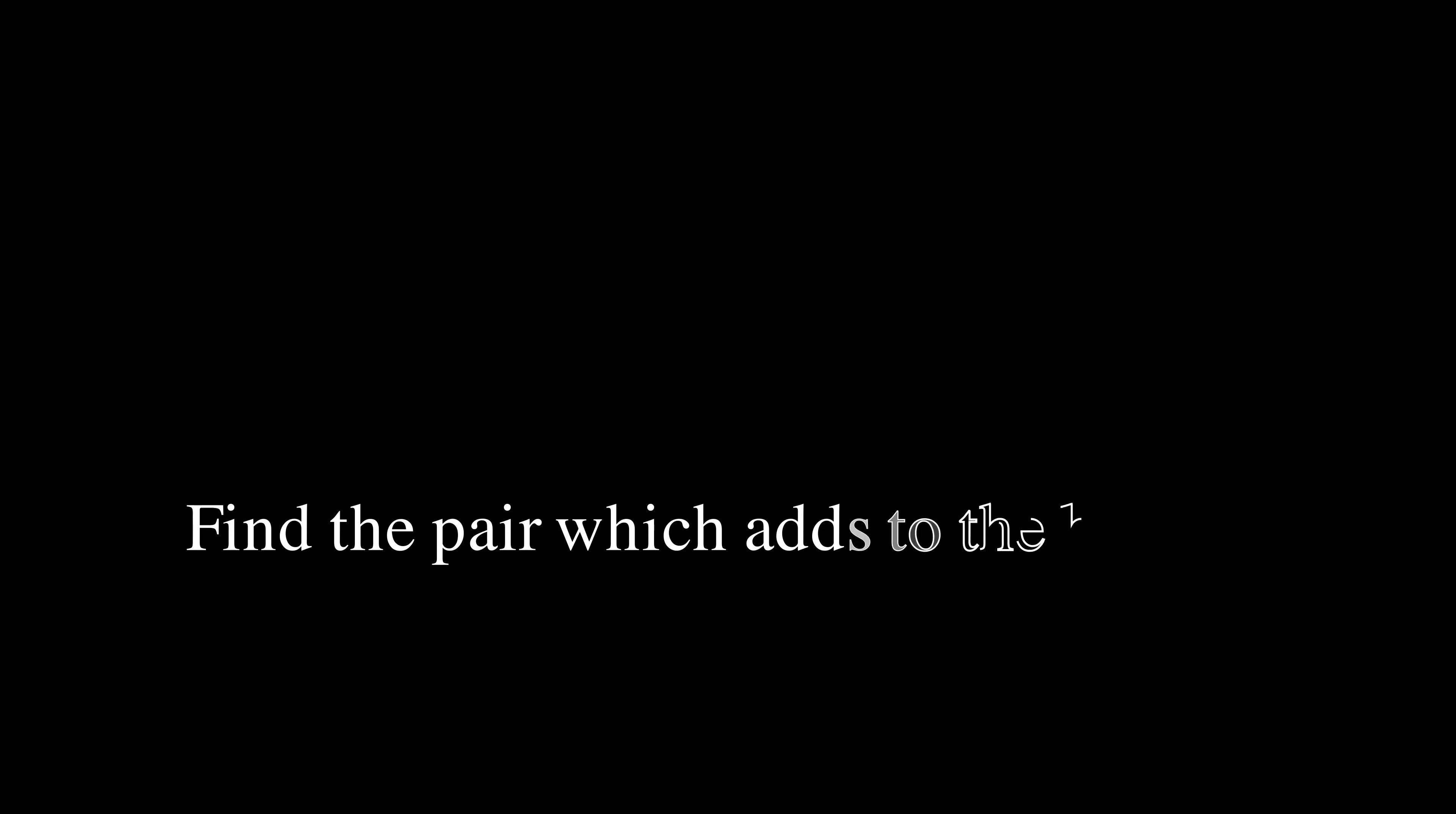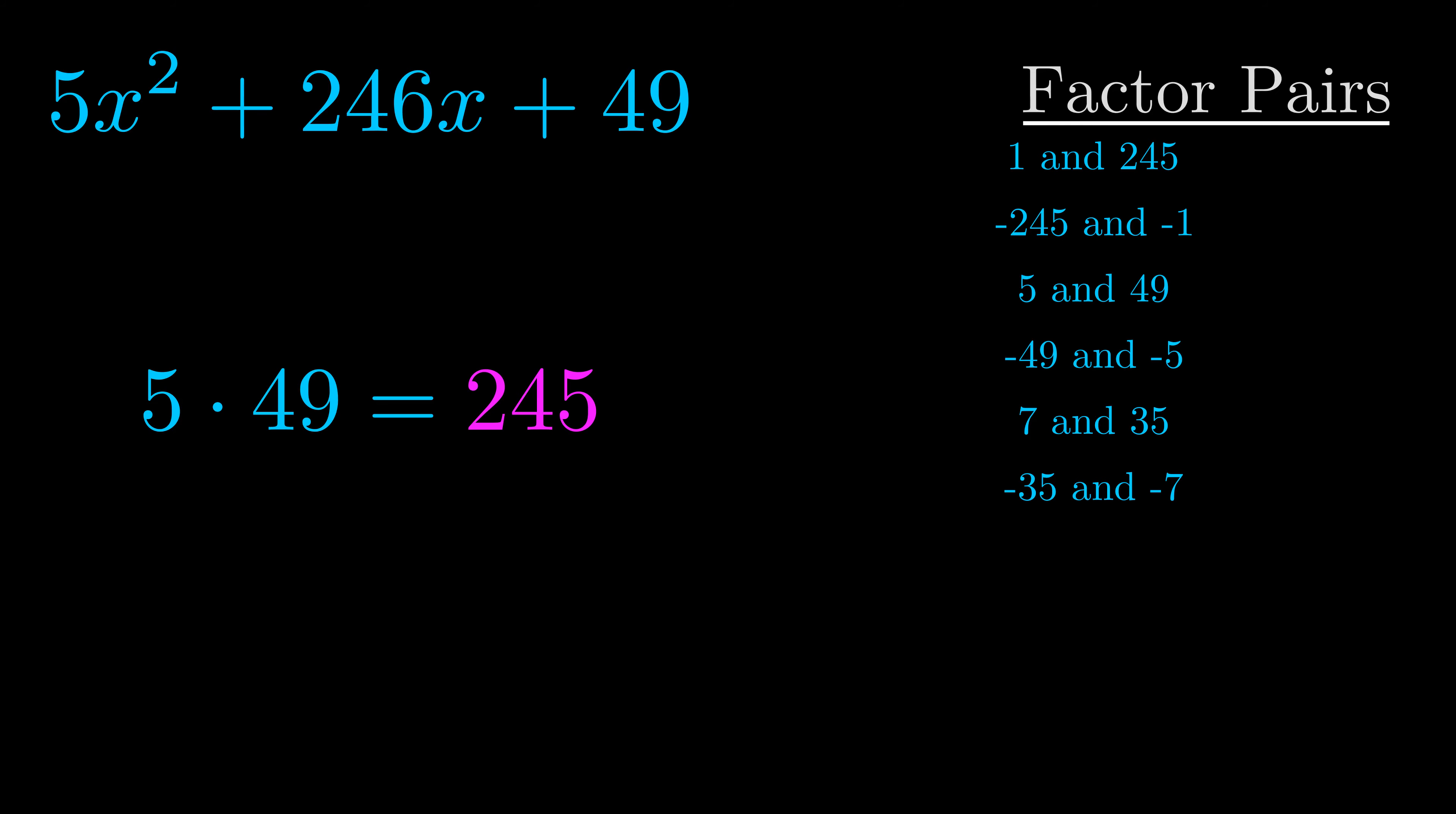The b value is the coefficient on the x term. That's the middle term, the one that we haven't done anything with yet. And really this is the only factor pair that we need.